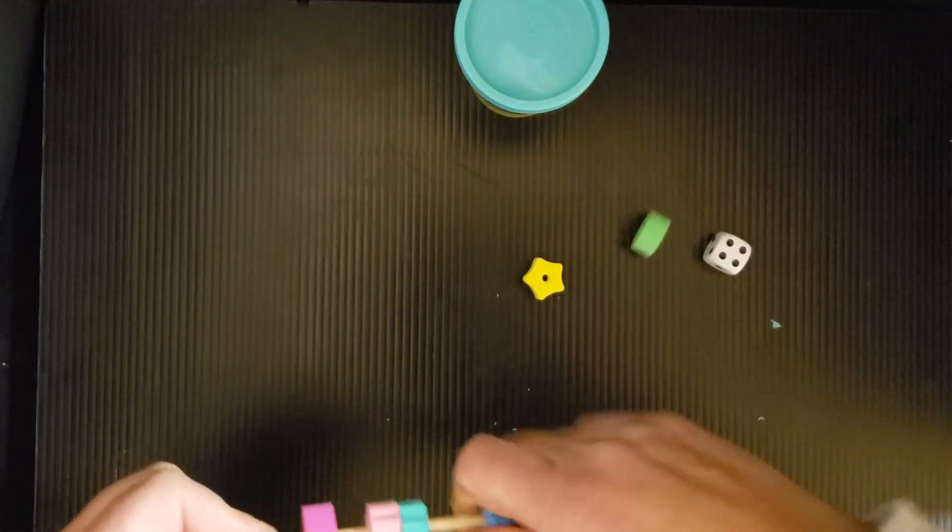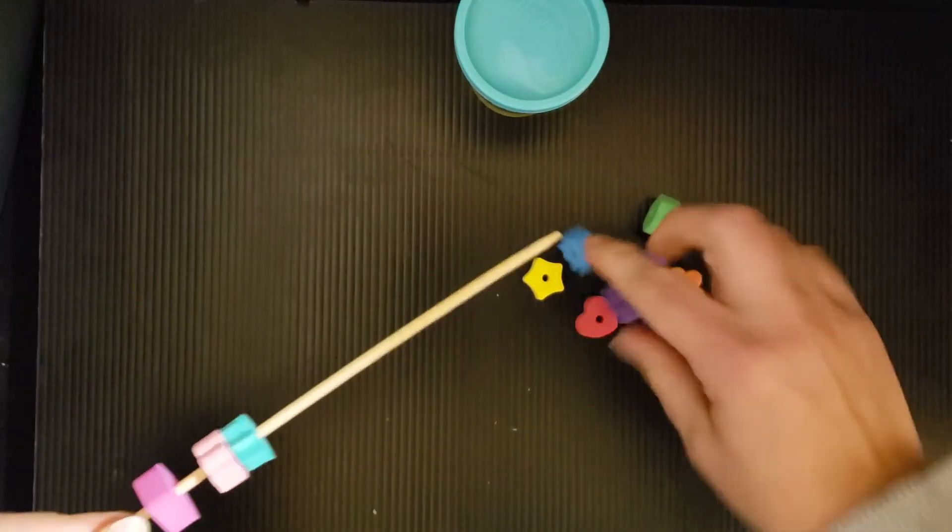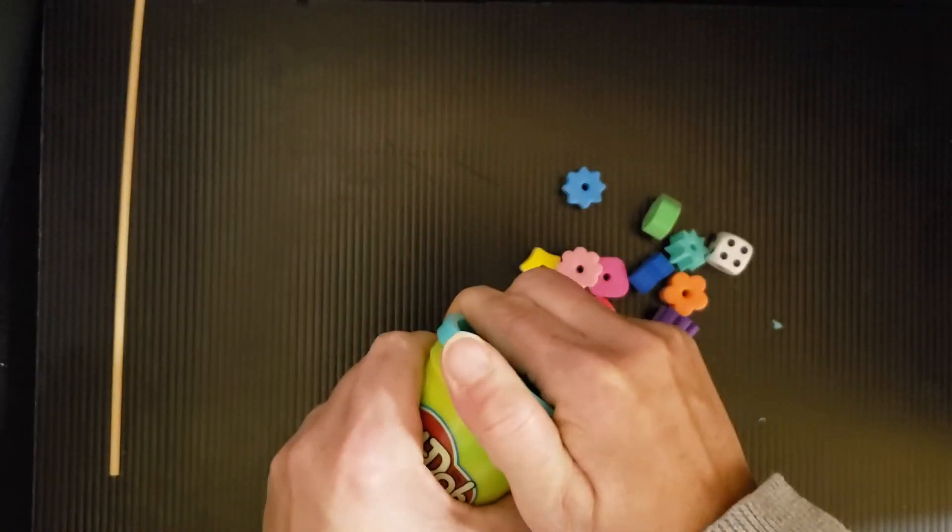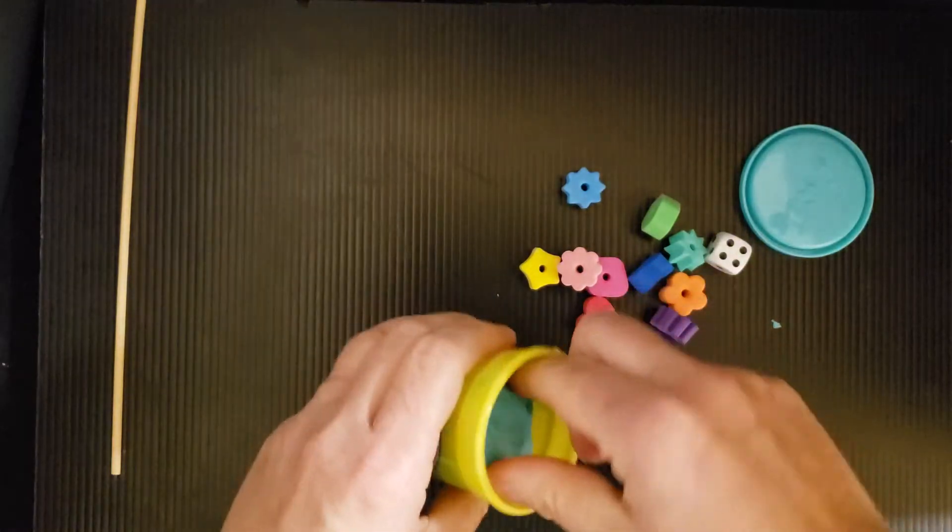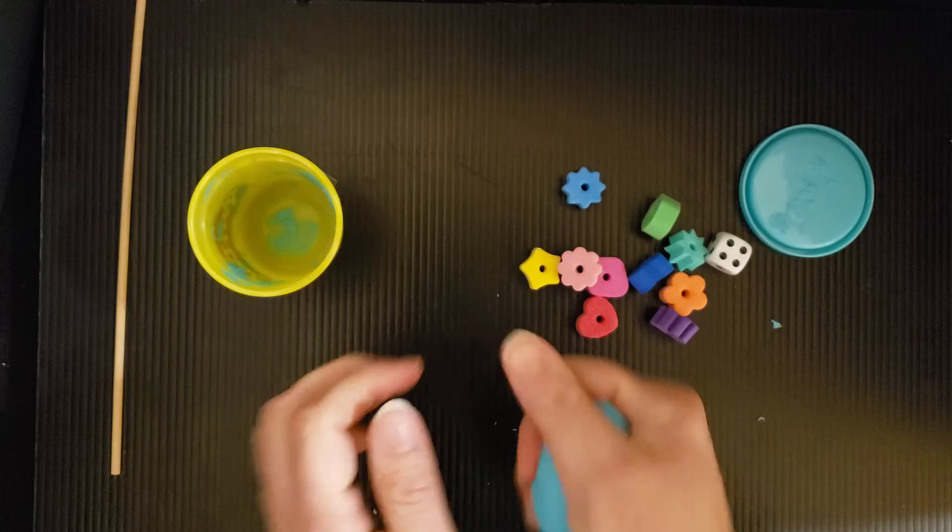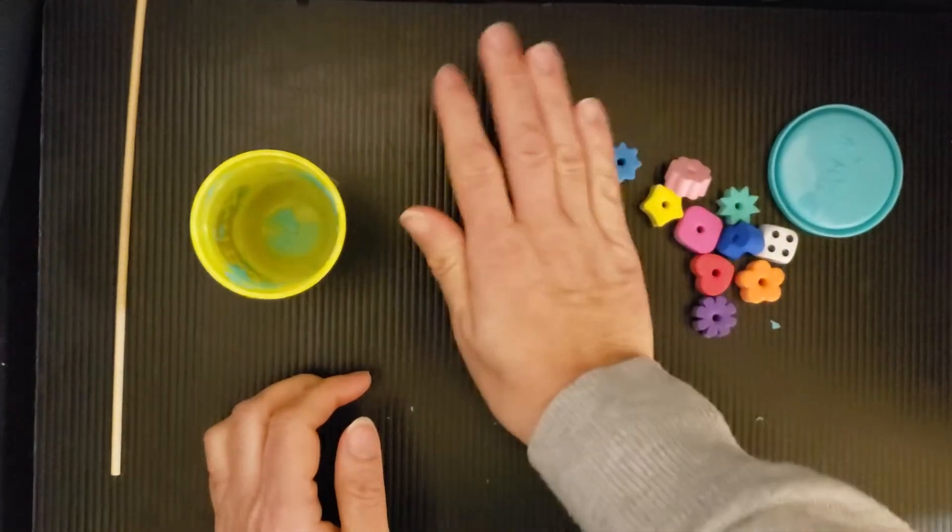But we're also going to just remove these to do something else with our foam shapes with our Play-Doh. So we're going to open the Play-Doh and squish it, squeeze it, and then press it onto our table.